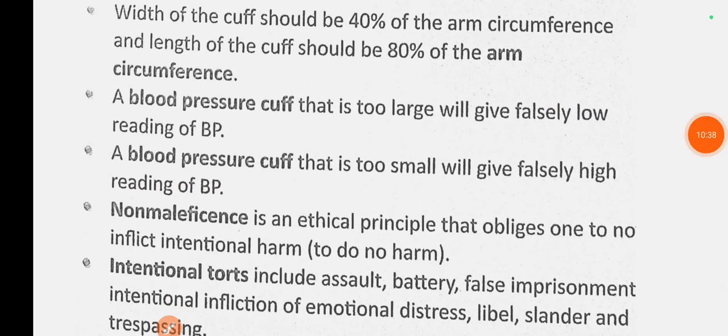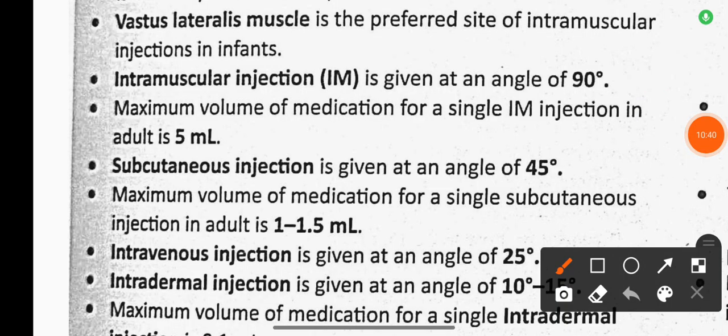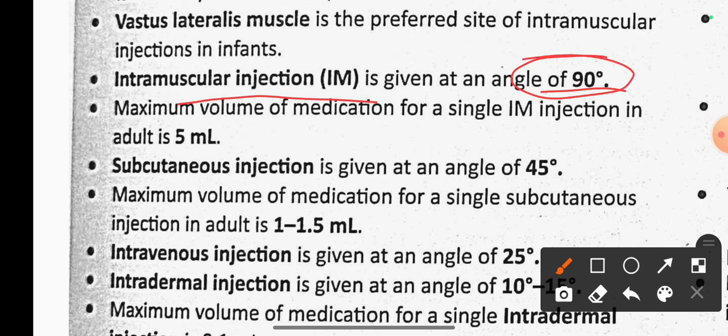Intramuscular injection is given at an angle of 90 degrees. The maximum volume of medication for a single intramuscular injection is 5 ml in adults.